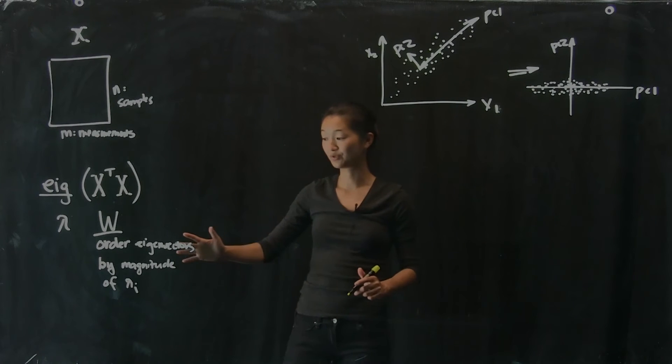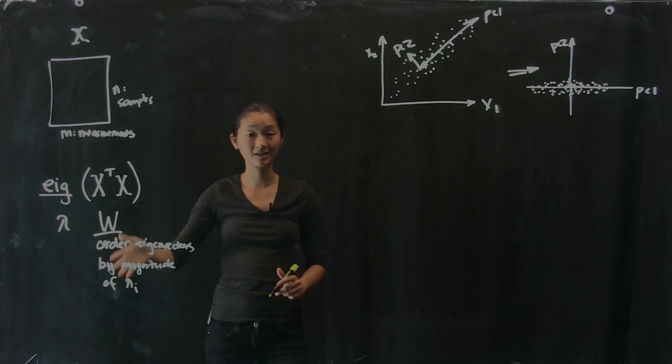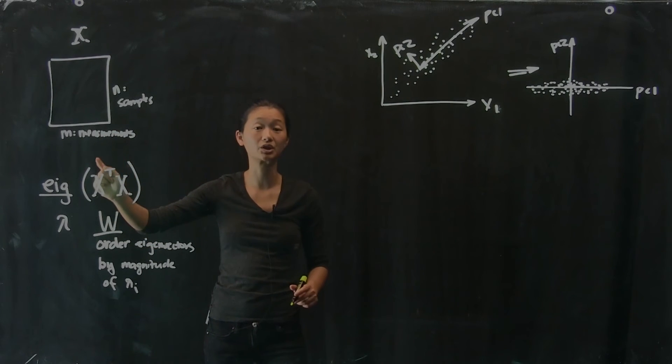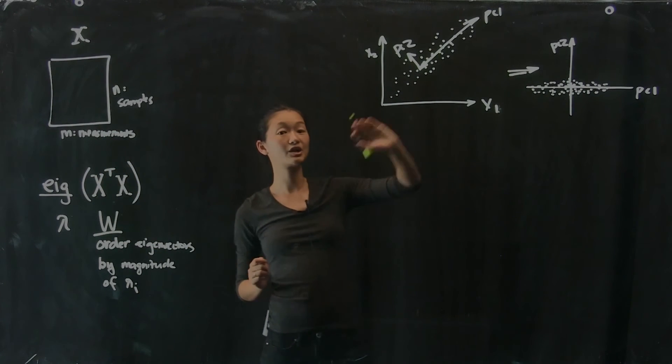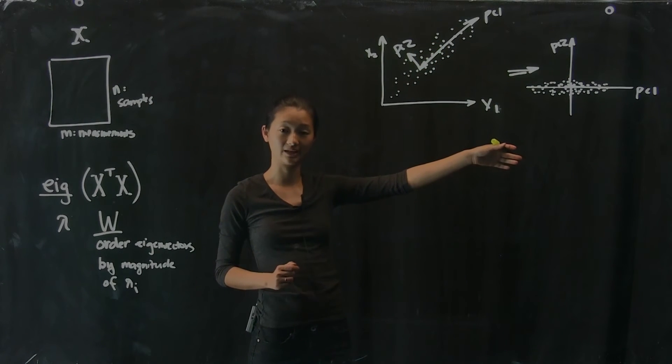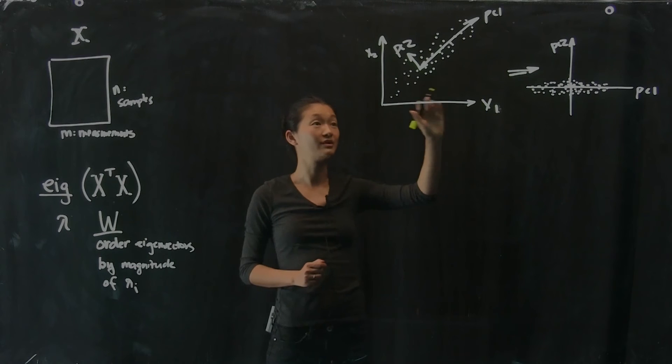And what that's going to do for me is I'm going to get a set of directions in M dimensional space in order of largest variance explained to smallest variance explained.